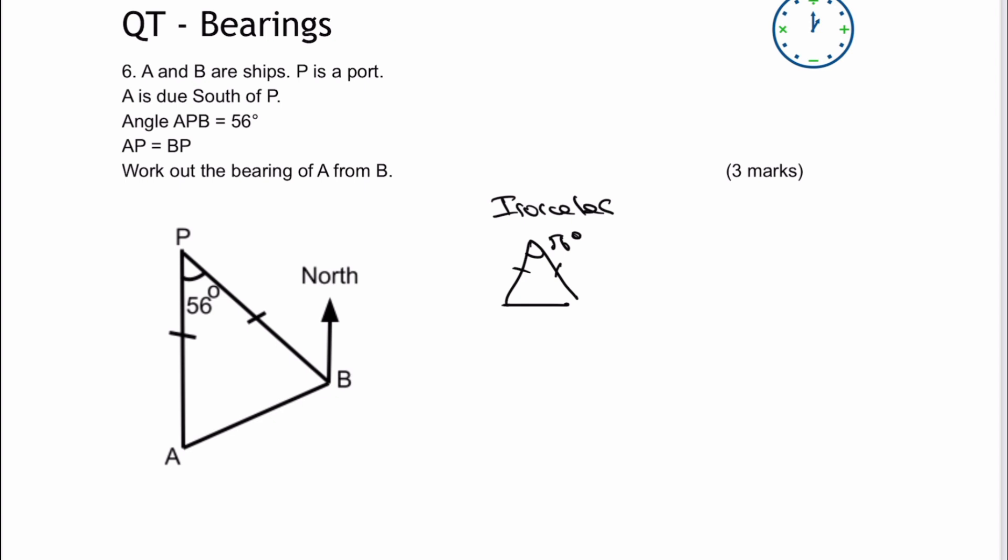Now that allows us to work out the bottom two base angles. So if we have a look at that, we've got 180 take away 56, and that equals 124 degrees.